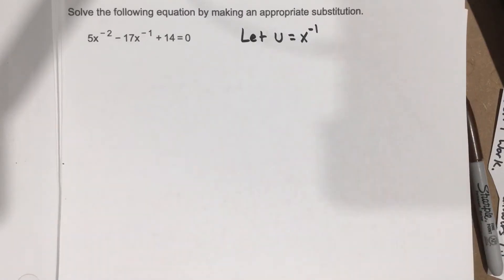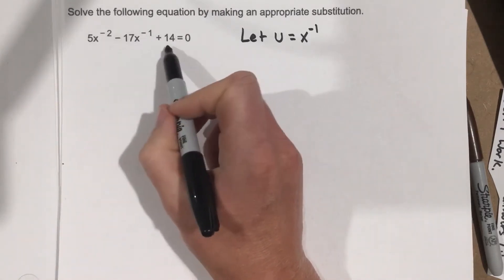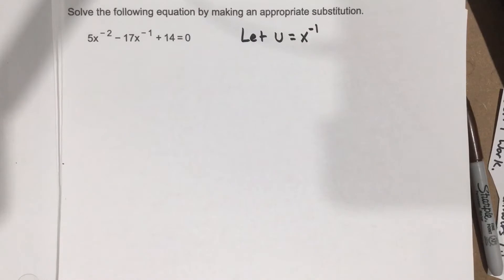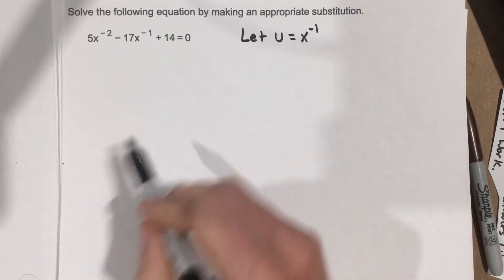Now, this may seem not very intuitive to you why you would do this. But what we're trying to do is we're trying to rewrite this in a quadratic form so that we can solve it and then resubstitute x to the negative 1 back in at the very end.